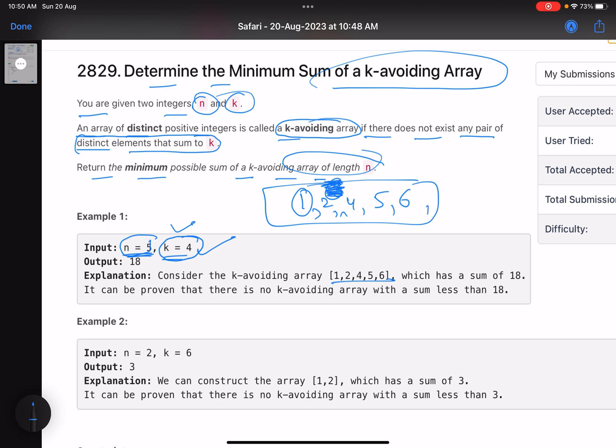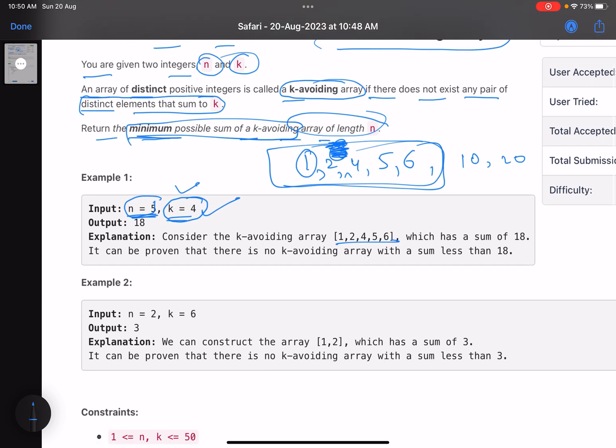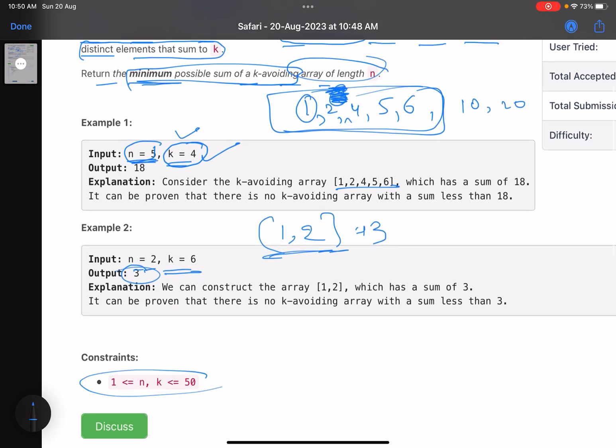Now remember there are other elements as well you can include, like 10, 20, but again it says we have to return the minimum possible sum of k-avoiding array, so we pick the minimum possible elements. Similarly here, if you talk about k equals 6, n equals 2, I can choose 1 and 2, sum is equals to 3, and none of the pairs have a sum equals to k.